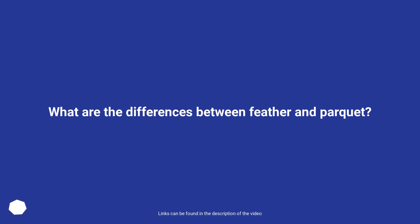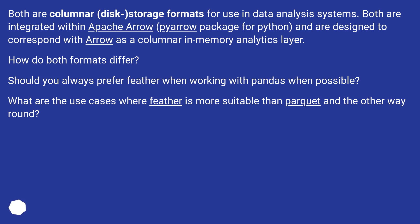What are the differences between Feather and Parquet? Both are columnar disk storage formats for use in data analysis systems. Both are integrated within Apache Arrow, the PyArrow package for Python, and are designed to correspond with Arrow as a columnar in-memory analytics layer. How do both formats differ? Should you always prefer Feather when working with pandas when possible? What are the use cases where Feather is more suitable than Parquet and the other way round?